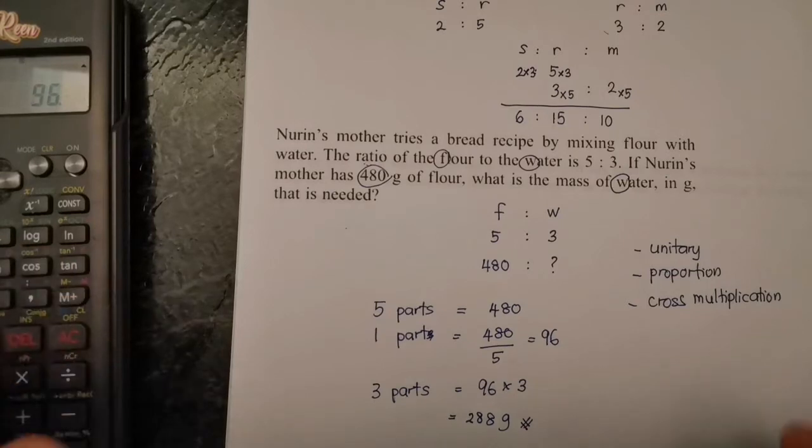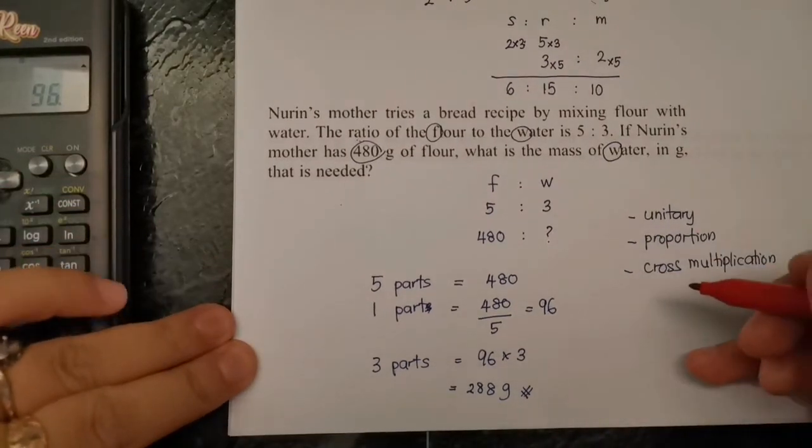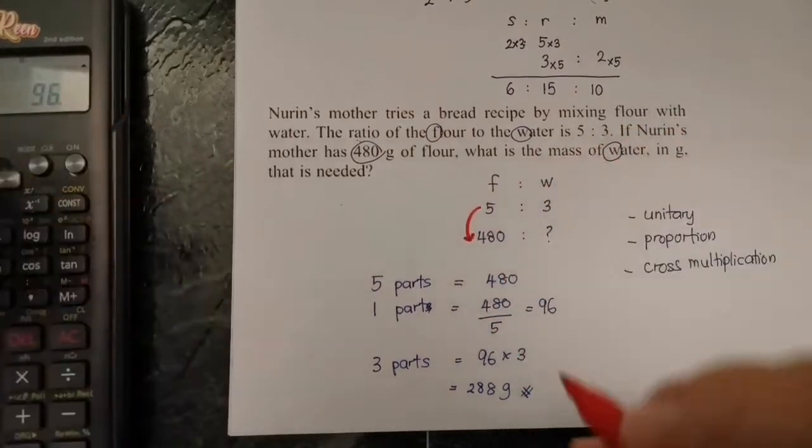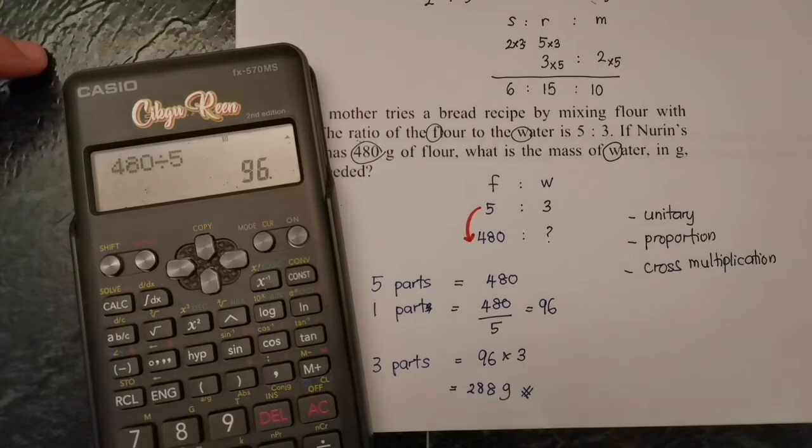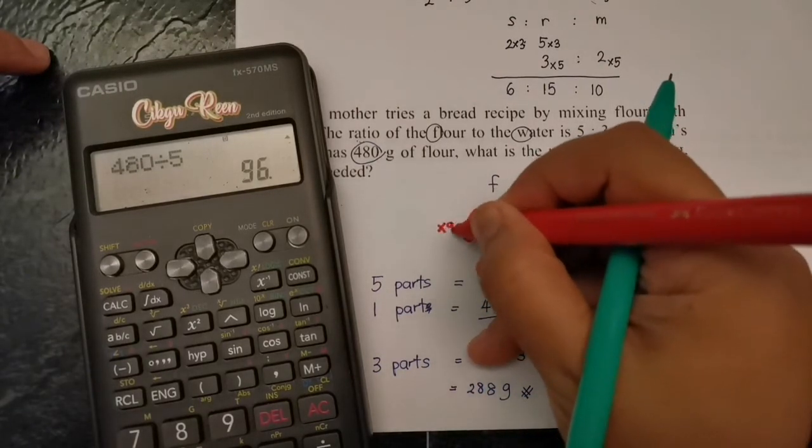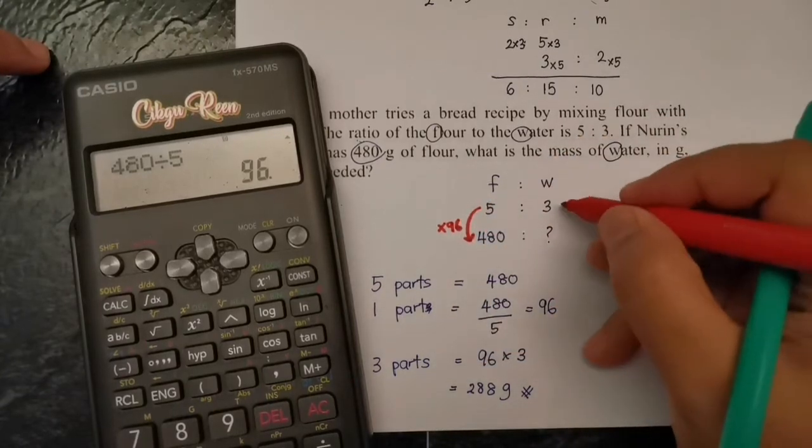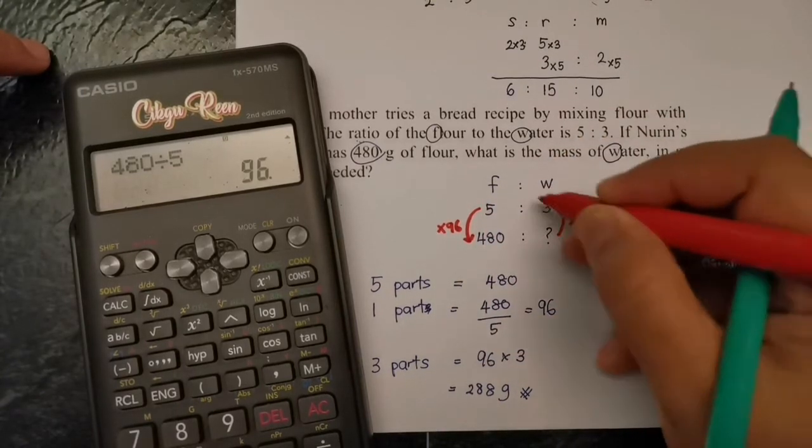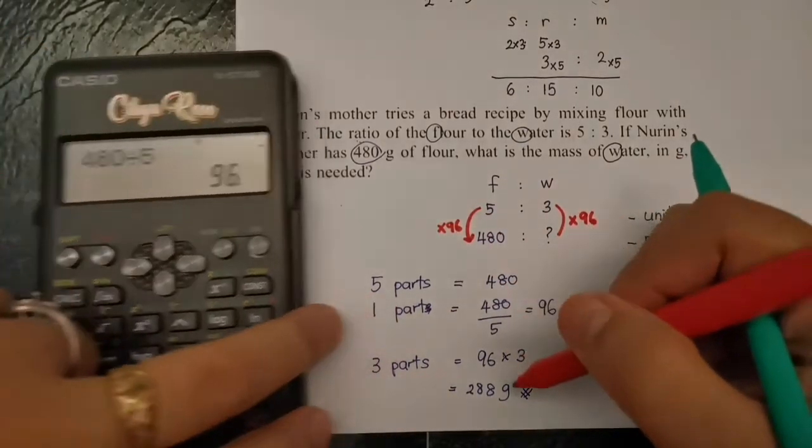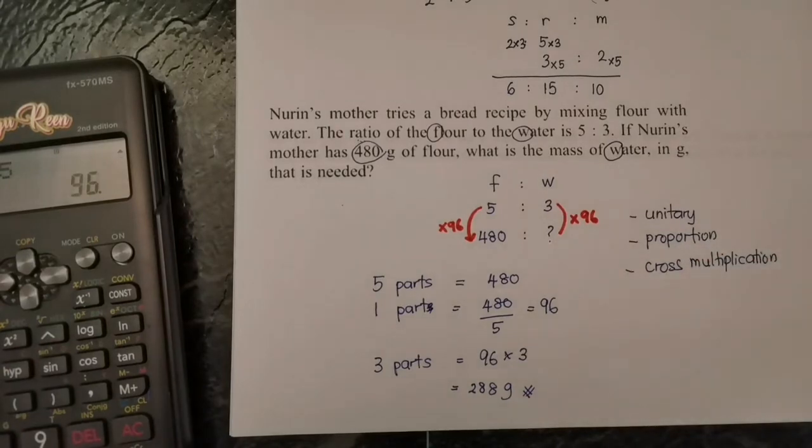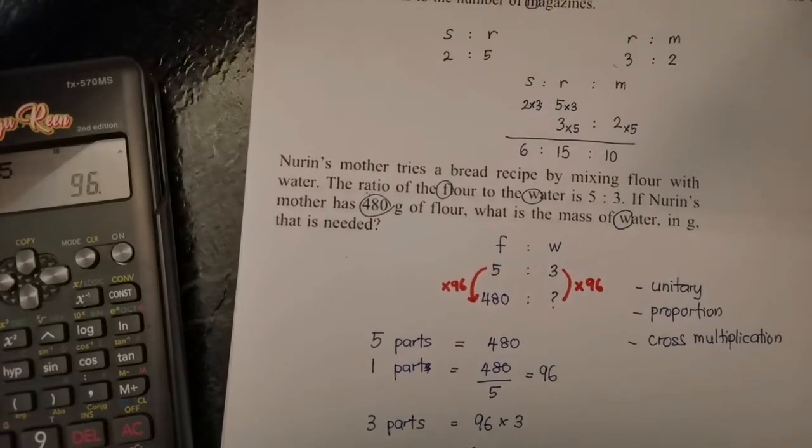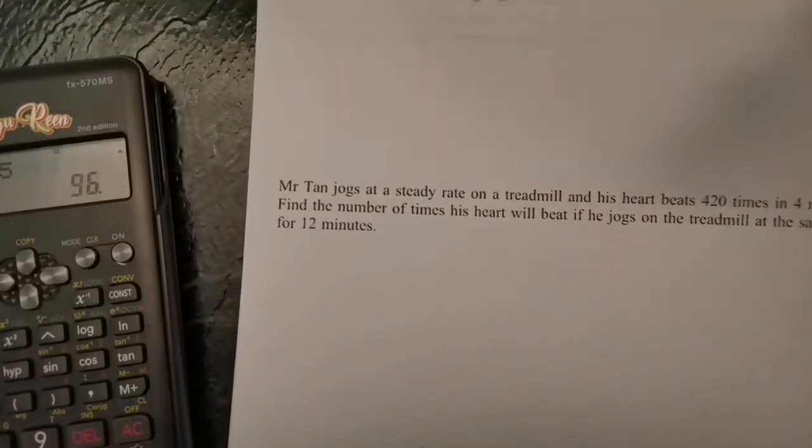Some people want to see the proportion method. 5 becomes 480, what does it need to multiply? Same thing actually, it's easy. You take 480 divide 5, meaning it's multiplied by 96, so automatically 3 must also be multiplied by 96. The calculation is the same if you do it this way.